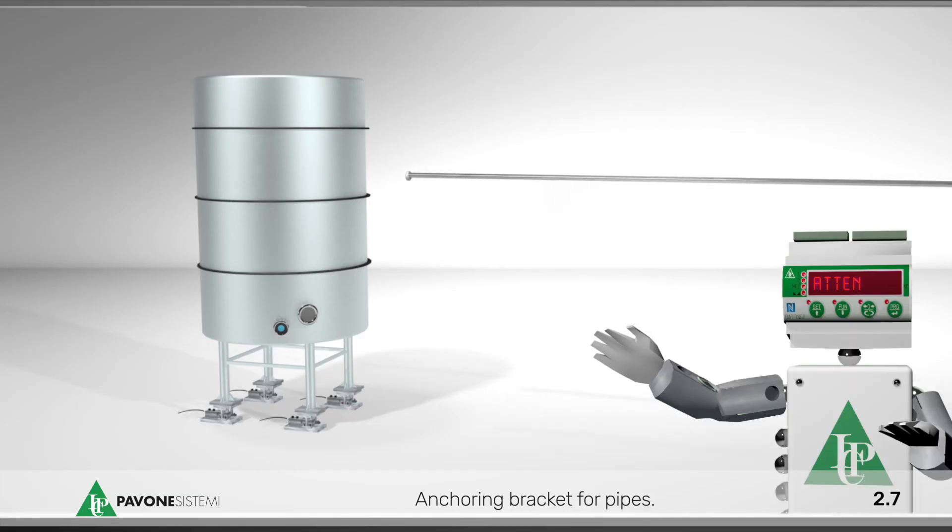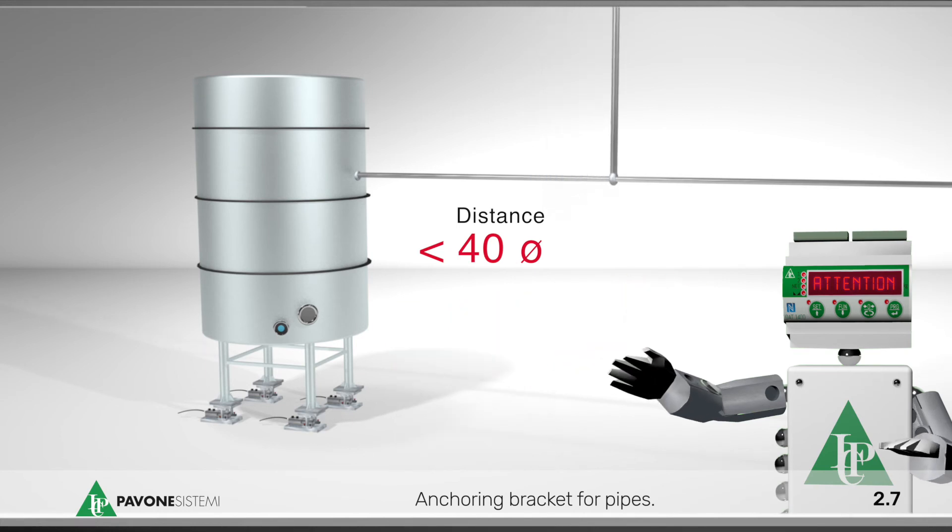Anchoring bracket for pipes. Alternatively, place the first anchored bracket in the horizontal section, as far as possible from the weighing structure at least 40 times the diameter of the pipe.